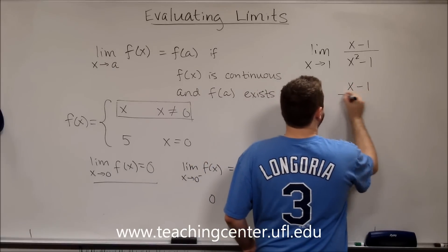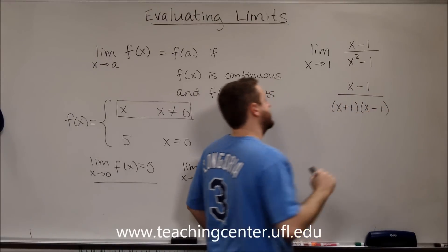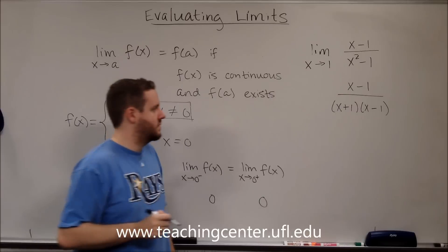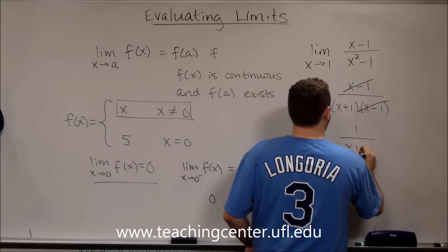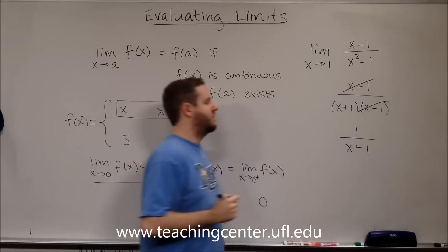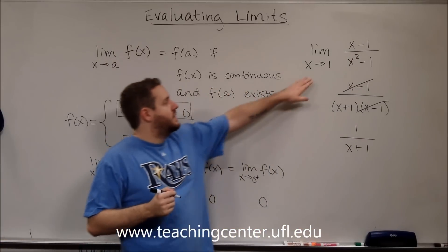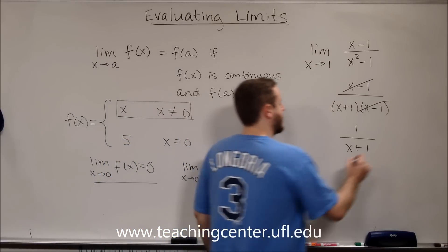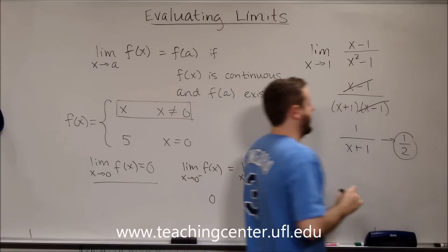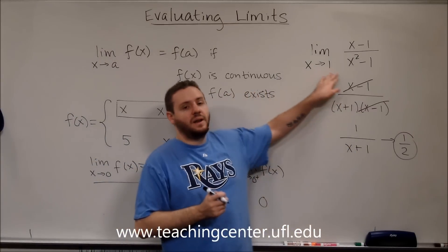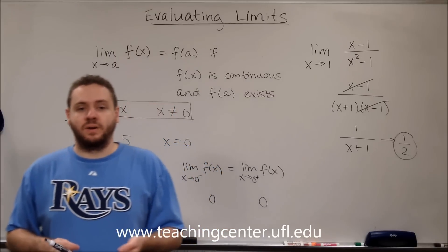Because your denominator factors, because it's the difference of two squares, you can see there that x minus ones cancel out and you're left with one over x plus one. In this form, now we can use direct substitution. We can plug in one and we get one half. So even though the limit was indeterminate first, you can simplify it and then get your answer that way.